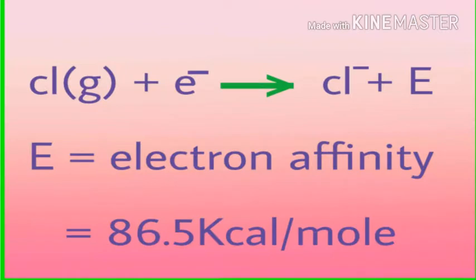The formation of chloride ion from chlorine atom. When the element chlorine gains an electron, it forms a chloride ion and it emits some energy. That is called electron affinity. Cl gas plus electron gives us Cl- plus E. E is equal to electron affinity, that is equal to 86.5 kcal per mole.